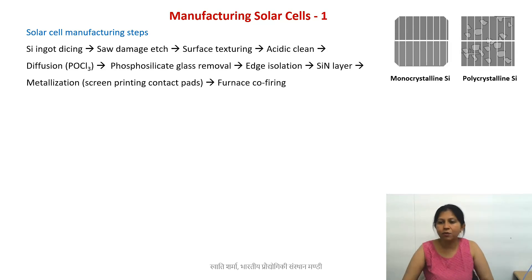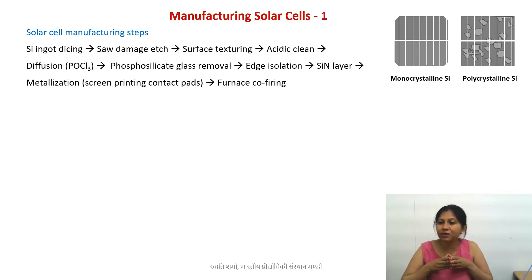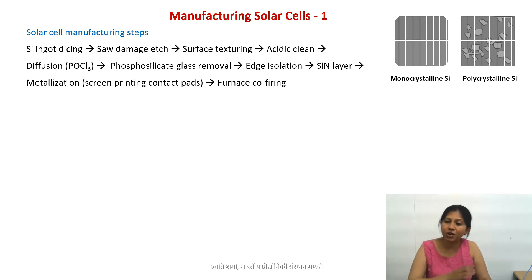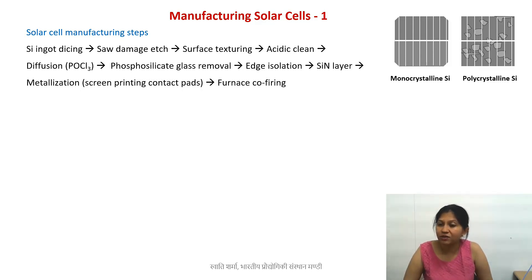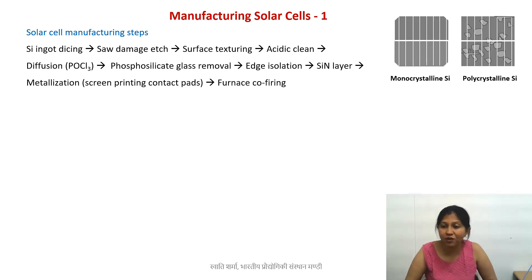Now let's talk about the manufacturing steps. These are the steps for a very standard, commercially used process. You start with a silicon ingot, then dice it using a saw. Sawing causes damage to the surface, which must be removed — this is called the saw damage etch. The next step is texturing of the surface, which means giving a certain pattern to a flat surface.